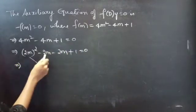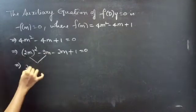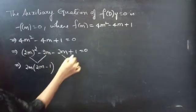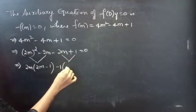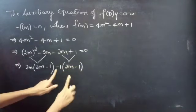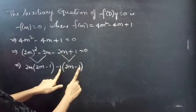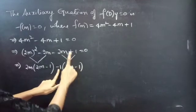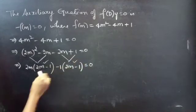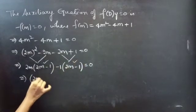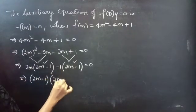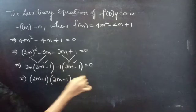Take 2m common from the first two terms: 2m times (2m minus 1). Then take minus 1 common from the next two terms: minus 1 times (2m minus 1). That gives minus 2m plus 1. Now, since (2m minus 1) appears in both terms, take it common. You get (2m minus 1) times (2m minus 1) equals to 0.